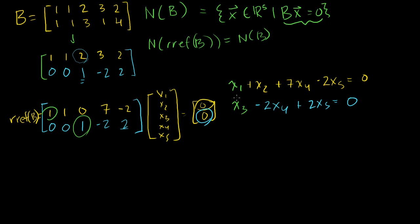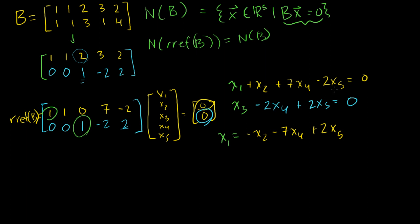Solving for our pivot variables — x2, x4, and x5 are the free variables we can set to anything. We get x1 equals minus x2 minus 7x4 plus 2x5, just by subtracting those terms from both sides. And we get x3 equals 2x4 minus 2x5.